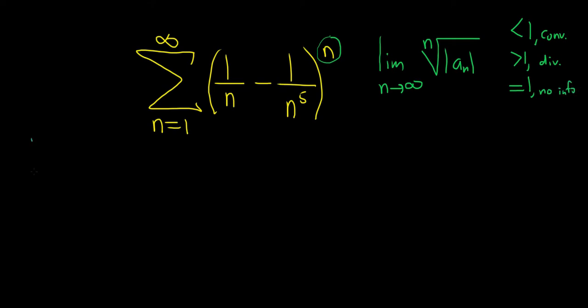Let's go ahead and start by taking the limit. So you have the limit as n goes to infinity of the nth root of the absolute value of a sub n. So you have the absolute value of one over n minus one over n to the fifth. And this is all being raised to the nth power.